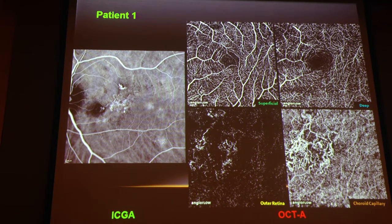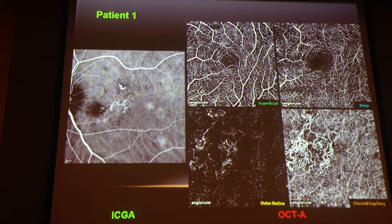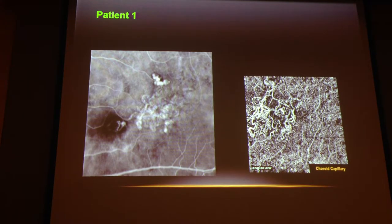Here's one of our patients. On the left, the ICG angiogram; on the right, the four layers of the OCT angiogram. We see polyps here and here, as well as the BVN. The superficial and deep layers look normal. When we get to the outer retina, we see some outlines of the BVN and perhaps the polyps. On the choriocapillaris, we see the BVN very nicely, as well as the polyps. Magnifying this, we can see that this polyp has a multi-lobulated structure which is mirrored in the OCT angiogram.